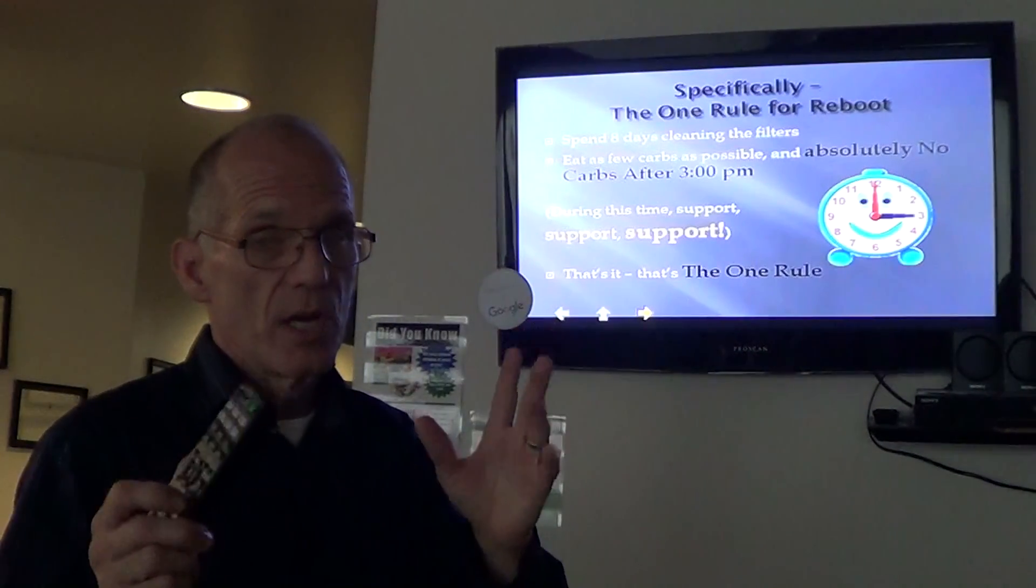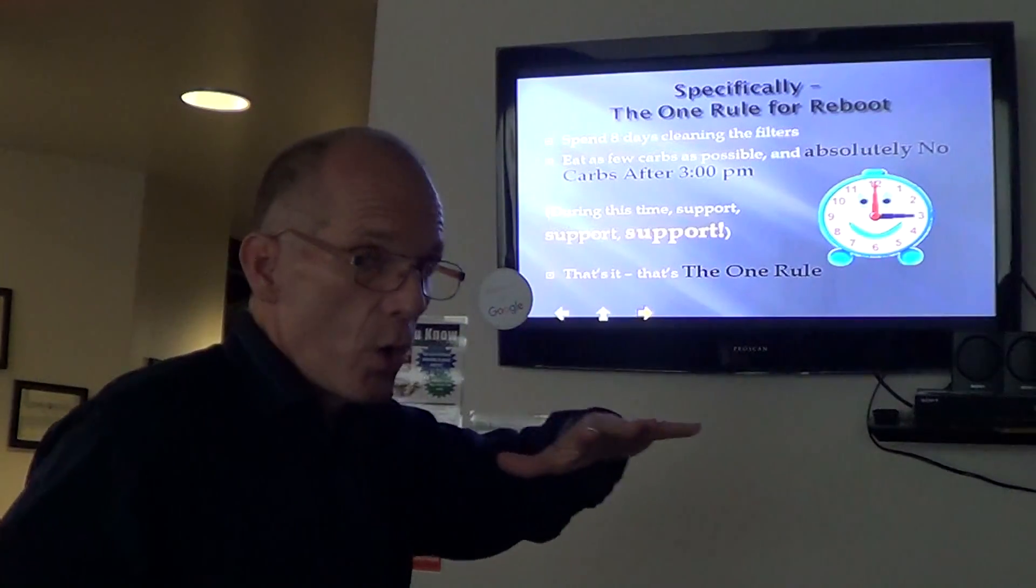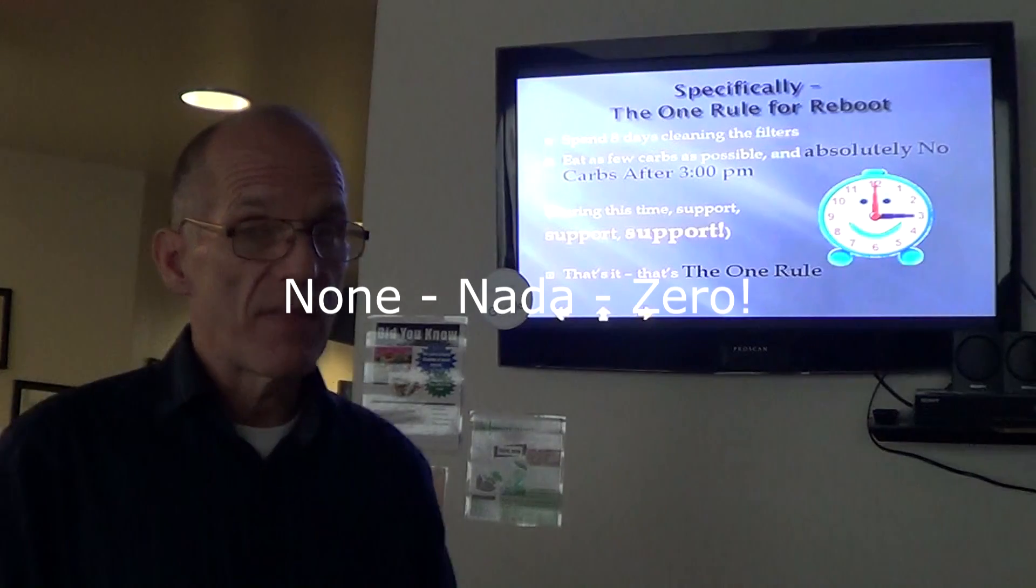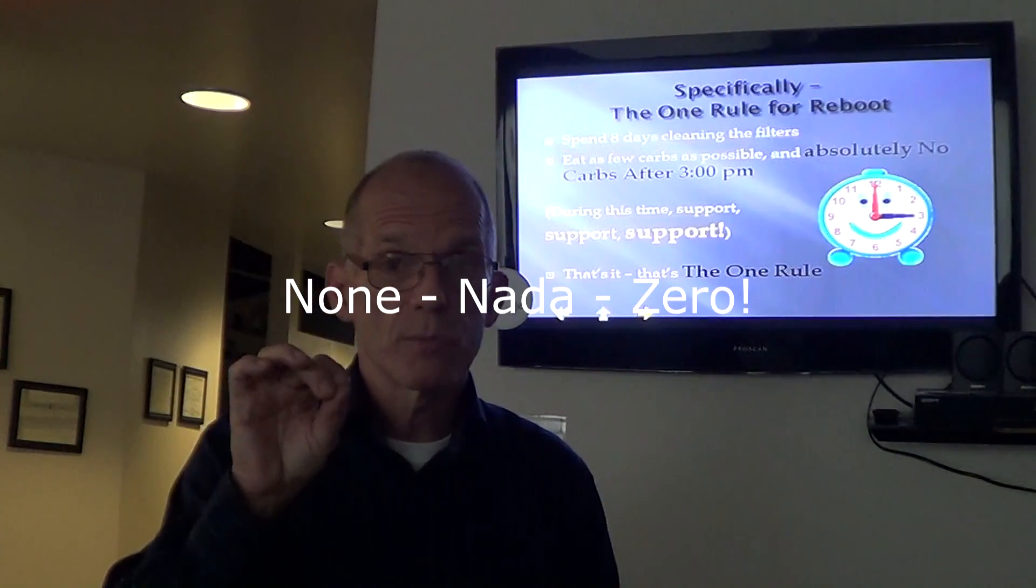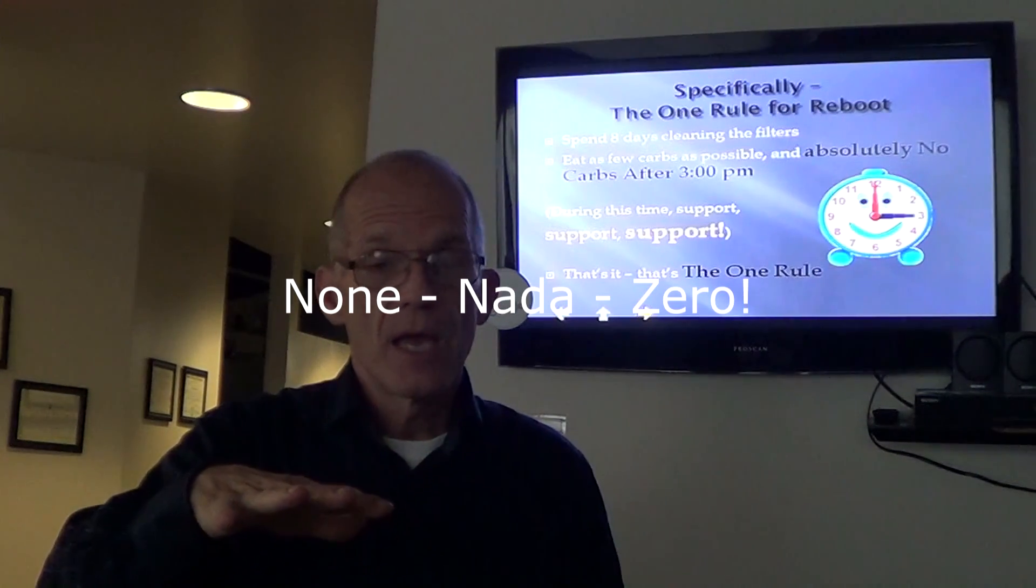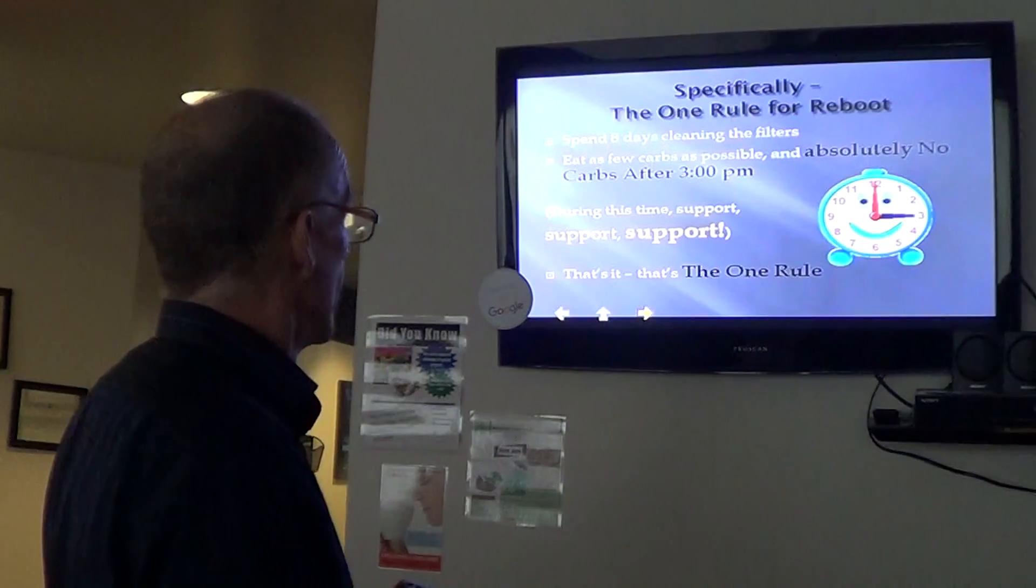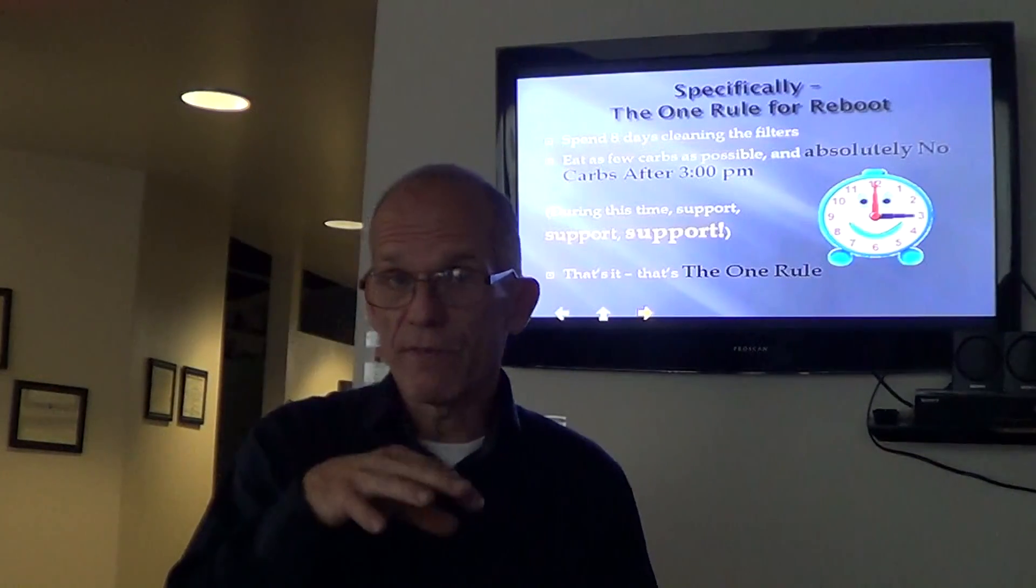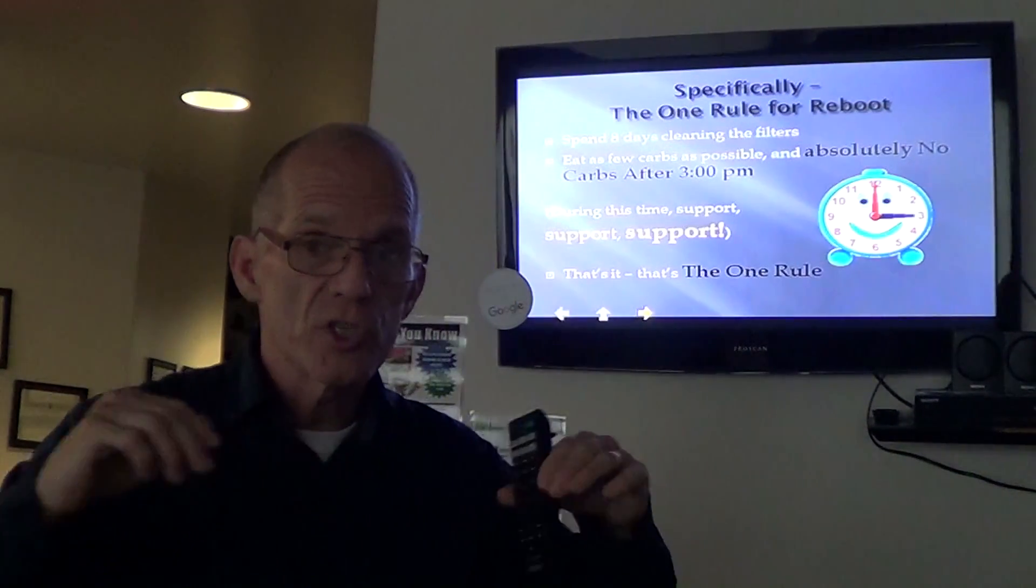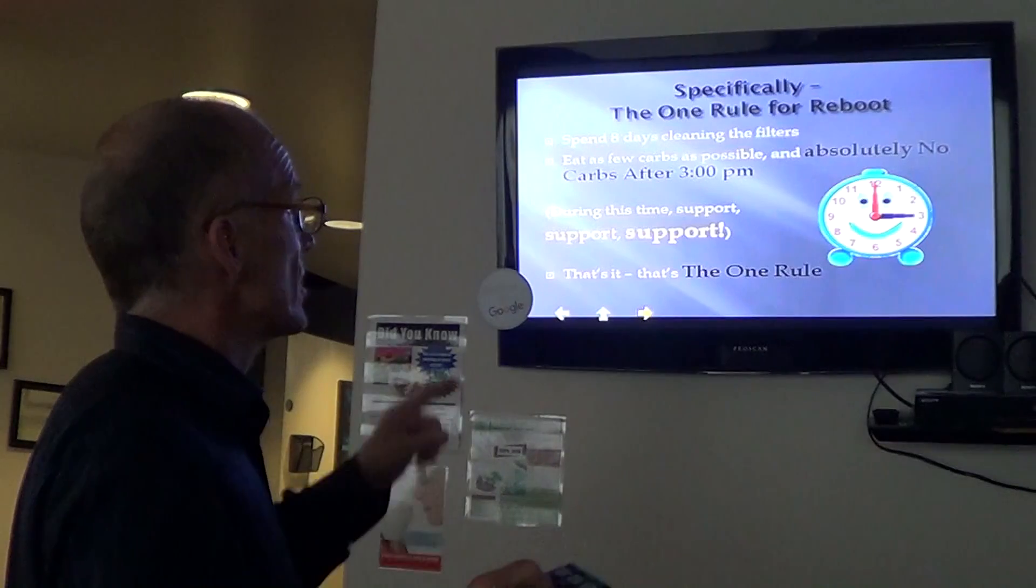In Reboot, the first eight days, we're detoxifying, we're cleaning the filters. It's important to have no carbohydrates at all after 3 o'clock every day. No carbohydrates after 3 o'clock. Now, keep in mind, that means no fruits, no vegetables, no breads, no sugars—carbohydrates, none after 3 o'clock. And even before 3 o'clock, through the whole day, you're going to very carefully control the carbohydrates. They're going to be very, very minimal. Alright? During that time, because you're cutting out fruits and vegetables as well as other immediate energy boost carbohydrates, you're going to need to support your nutrition, support your chemistry very carefully. And we're going to tell you how to do that in just a second. Alright? So that's the one rule for Reboot.